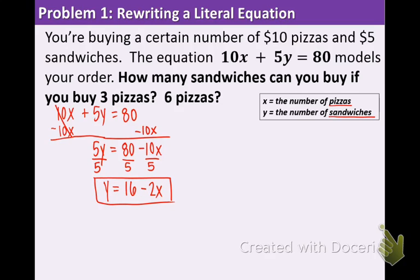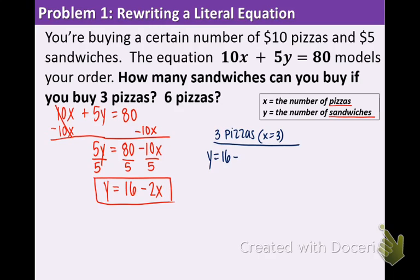The equation is solved for y, meaning y is all by itself on one side. Now we're going to plug in x equals 3. The question asks how many sandwiches can you buy if you buy 3 pizzas? So 3 goes in for the x: y equals 16 minus 2 times 3. That gives us 16 minus 6, which equals 10. So if you buy 3 pizzas, you can buy 10 sandwiches.